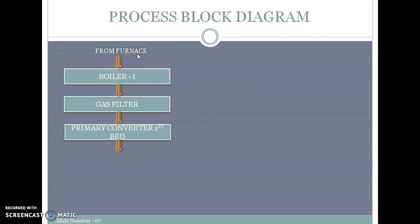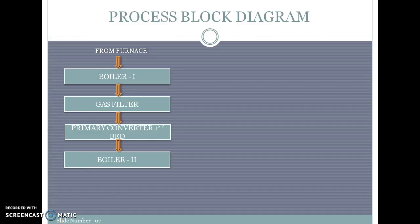Whatever SO2 comes around 150 to 160 degrees centigrade needs to be heated with boiler to 450 degrees centigrade and passed through gas filter to remove any impurities. Next it goes to primary converter, a first bed of four beds. In the first bed it gets converted. Now the SO2 is higher, so the conversion is higher in first converter. Because the reaction is exothermic, temperature of the product will increase to around 550.